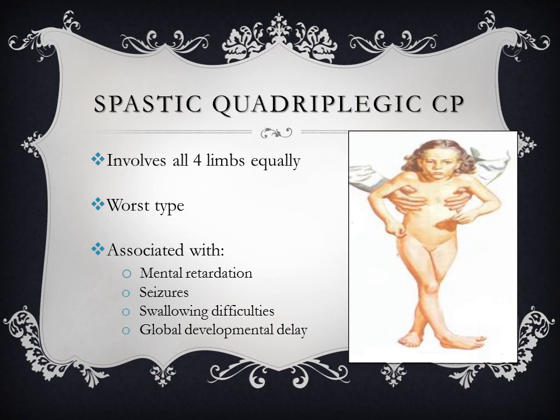In spastic quadriplegic cerebral palsy, all four limbs are equally involved. It is the worst type and is associated with mental retardation, seizures, swallowing difficulties secondary to pseudo-bulbar palsy, and global developmental delay.